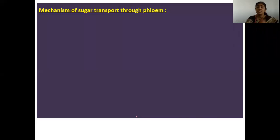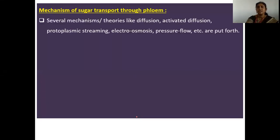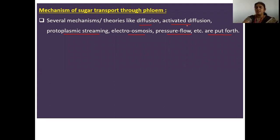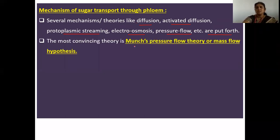We have to see the mechanism of sugar transport through phloem. Several mechanisms or theories have been proposed: diffusion, activated diffusion, protoplasmic streaming, electroosmosis, and pressure flow. The most convincing theory is the Munch pressure flow theory, also known as the mass flow hypothesis.